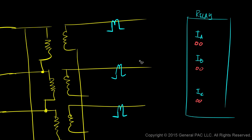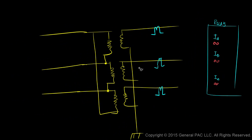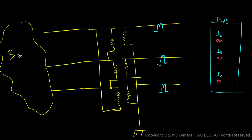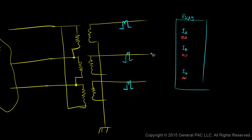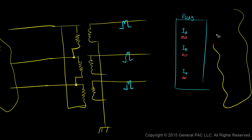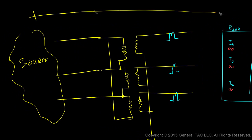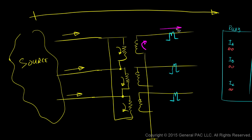Let's now talk about current flow. In a steady state system, let's assume that current flows from the source on the left-hand side to the load on the right-hand side. The current will flow in each line, and then on the secondary side it will flow like this.